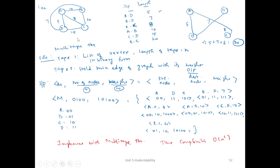To implement Kruskal's algorithm with a multi-tape Turing machine: Tape 1 contains the list of nodes A, B, C, D in binary order — A as 00, B as 01, C as 10, D as 11 — since the multi-tape Turing machine uses an encoded form. The length of the tape is taken as N. Tape 2 holds the minimum edge of the graph with its corresponding weight — for this example, the minimum edge is 5 and the path is A to D.